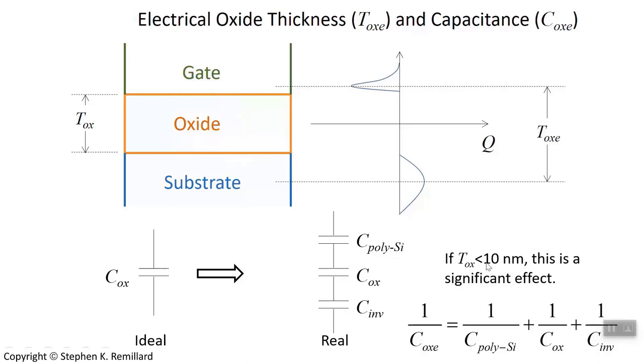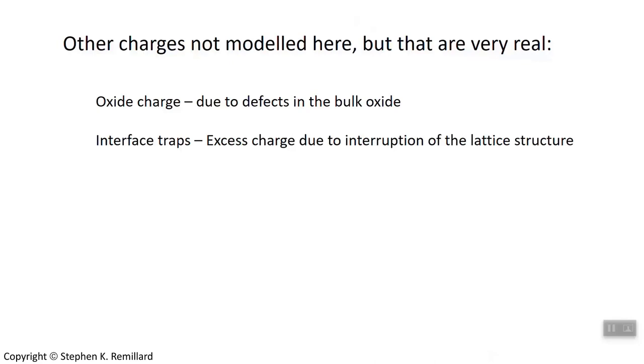If it's less than 10 nanometers or so, this is then a very significant effect. Even the capacitance of the polysilicon gate. We would like to think that that's just coated on the surface and so that the capacitance of the polysilicon gate is infinite. But it won't be.